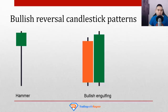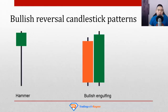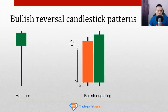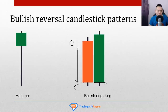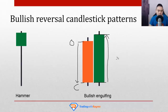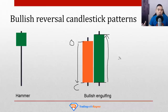The bullish engulfing pattern is a similar variation to the hammer, but the hammer is a one-candle pattern whereas the bullish engulfing is a two-candle pattern. On the first day, price opens and sellers take control, closing near the lows — sellers were celebrating. Then on the second day, all the buyers assemble — like Avengers assemble — and push the price up higher, closing near the highs. This second bullish candle pretty much overwhelmed the sellers. Buyers won this battle between buyers and sellers — temporarily.